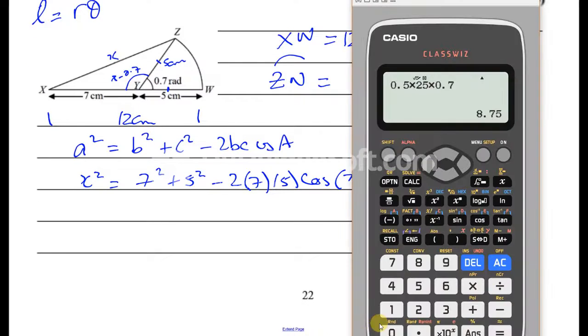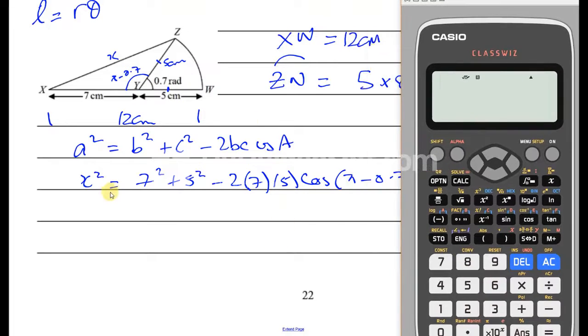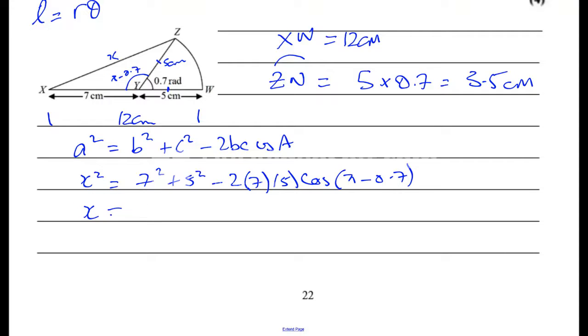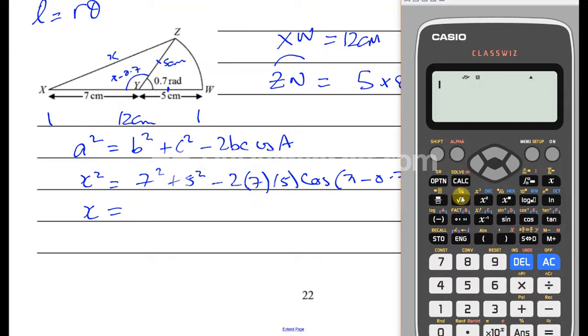We're using trigonometry and angles, so put it in radian mode. Let me put this in the calculator: the square root of 7² + 5² - 2(7)(5)cos(π - 0.7). That's the angle - the obtuse angle, 180 minus 0.7, but we're doing radians so we use π. That gives us x = 11.293...